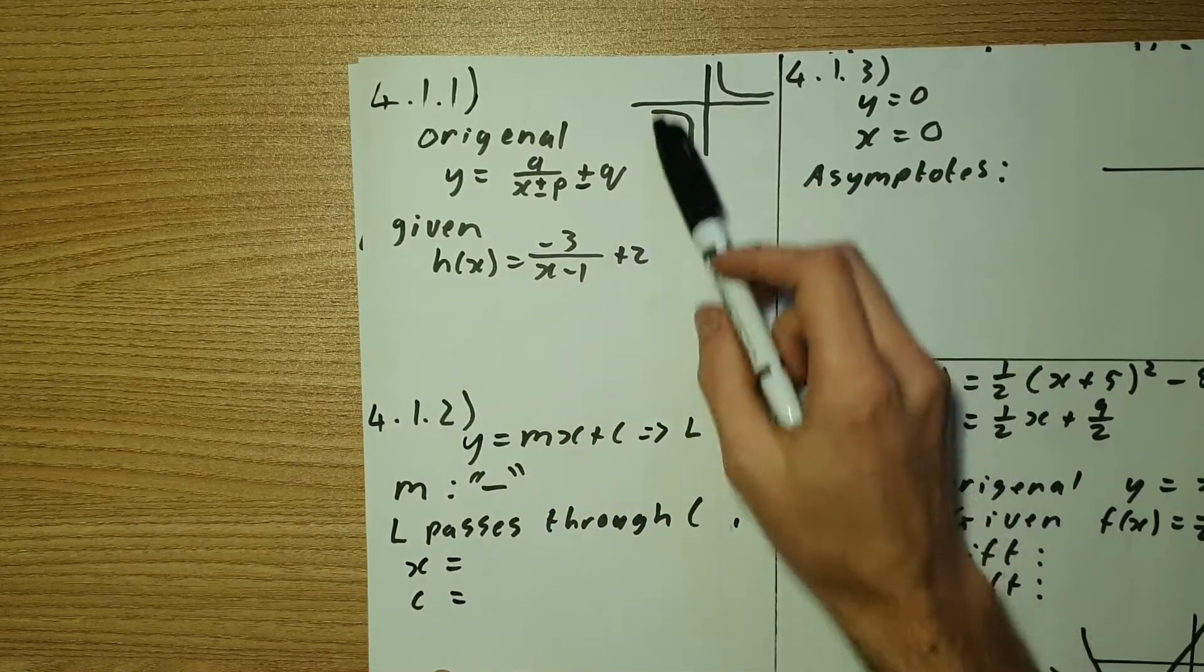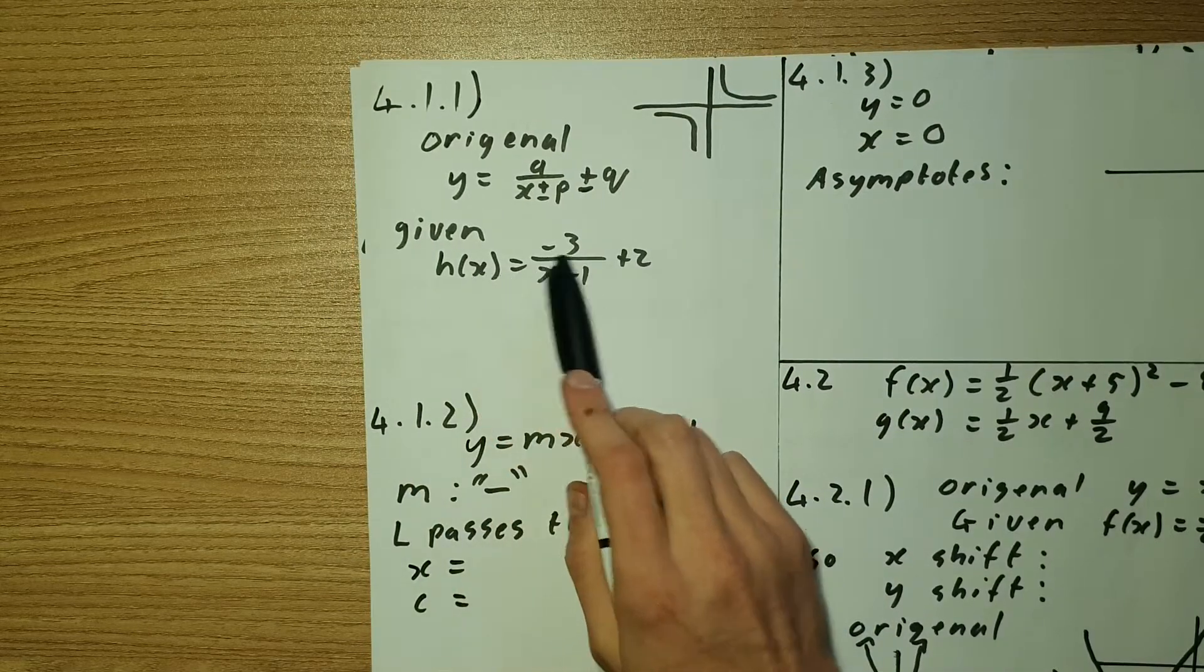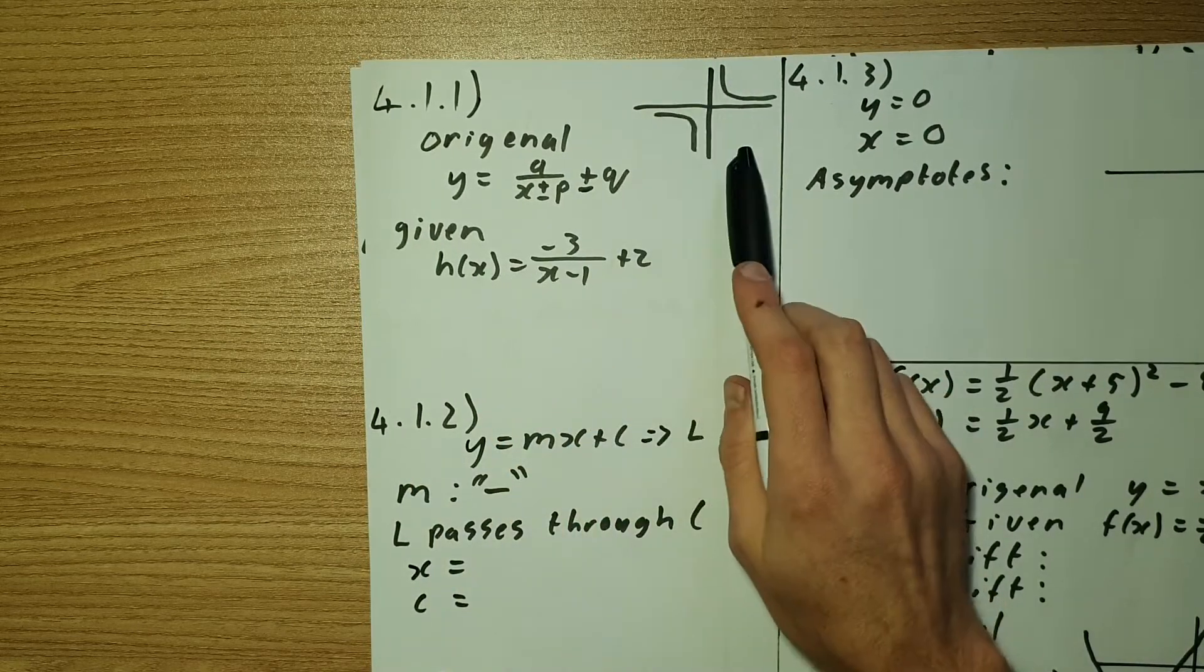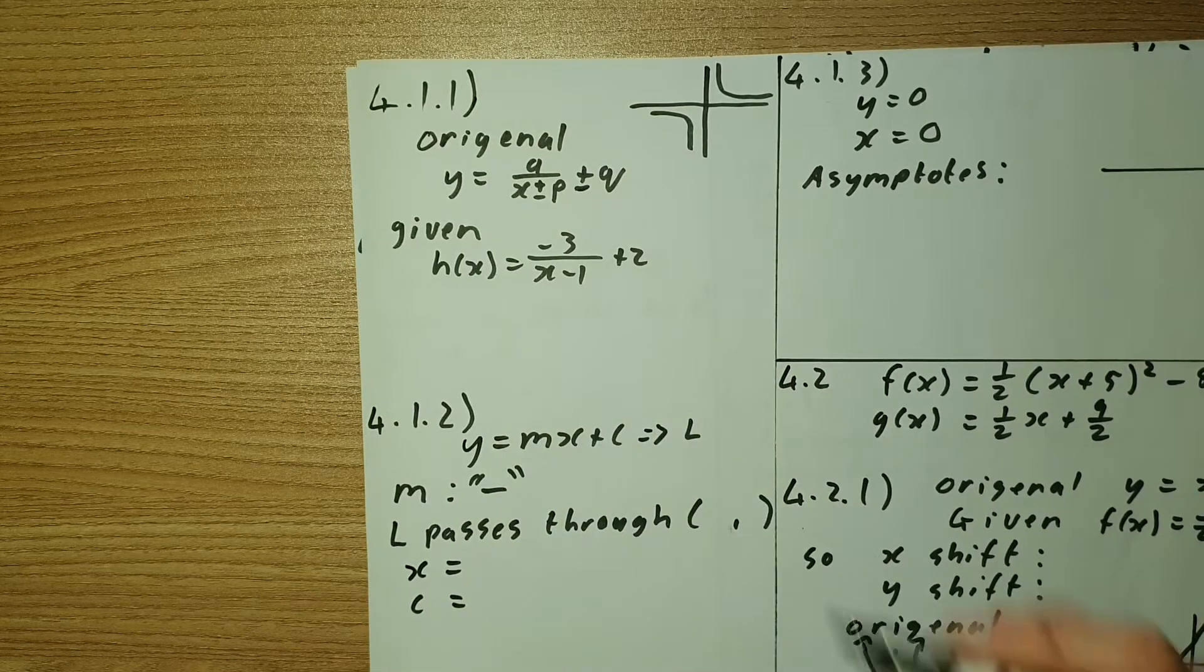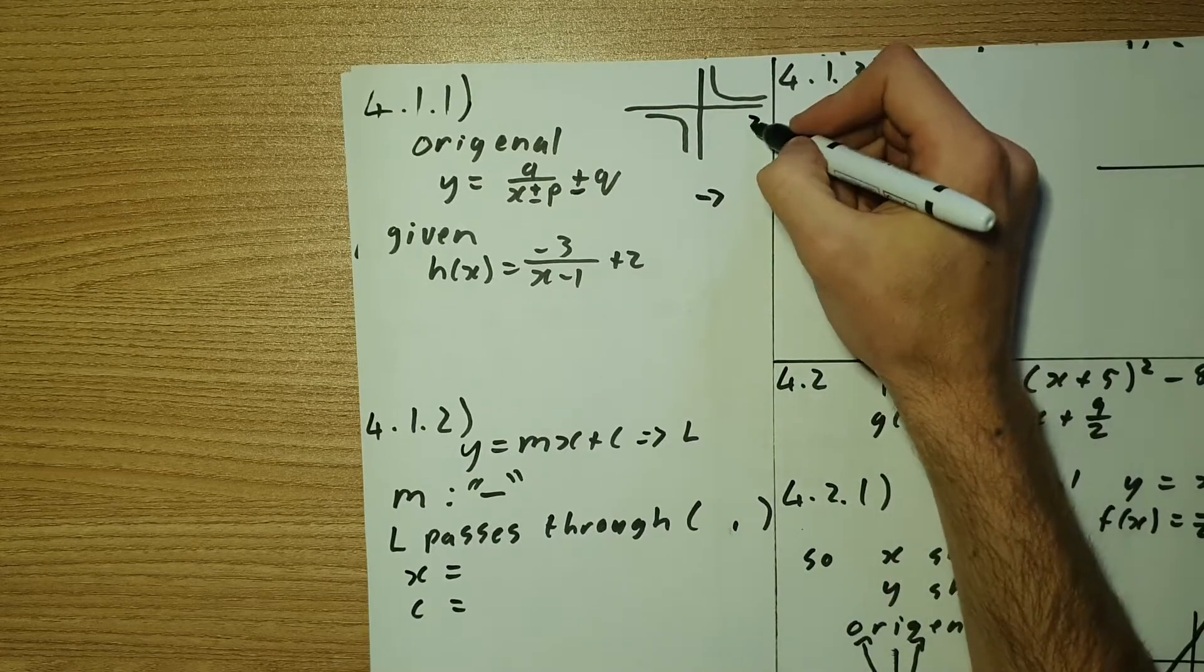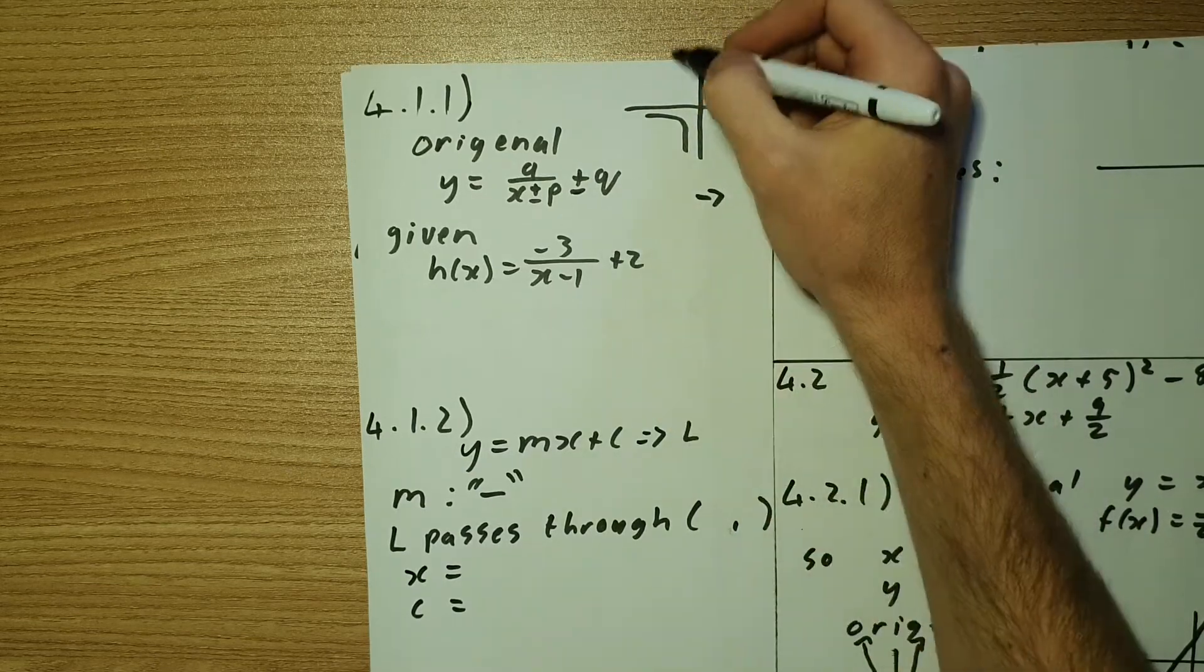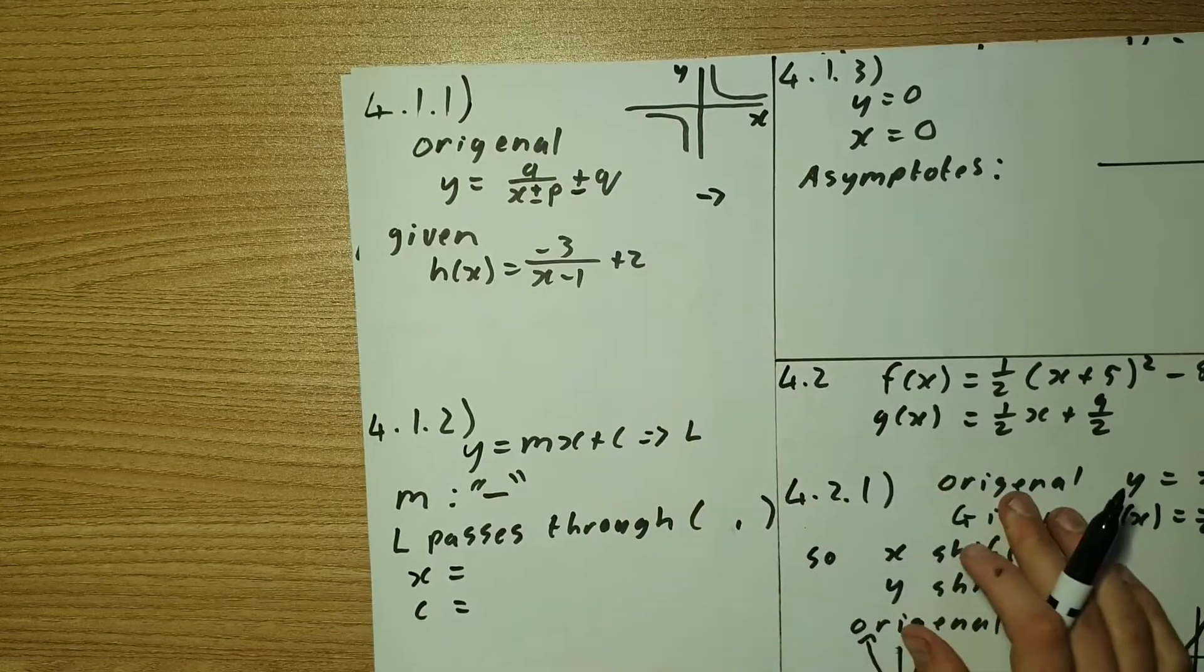Now what's given is we have negative 3, so our quadrants have swapped. Then x minus 1 which means we've moved to the right on my x-axis because it's a negative negative and we've moved two units up on my y-axis.